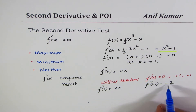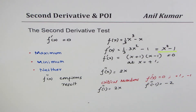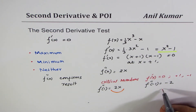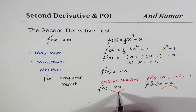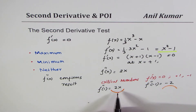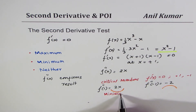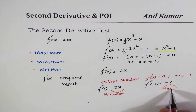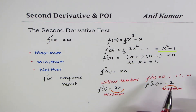For x = -1, the second derivative is negative, meaning the graph is concave down. For x = +1, the second derivative is positive, meaning the graph is concave up. When the graph is concave up, we expect a minimum; when it is concave down, we expect a maximum.